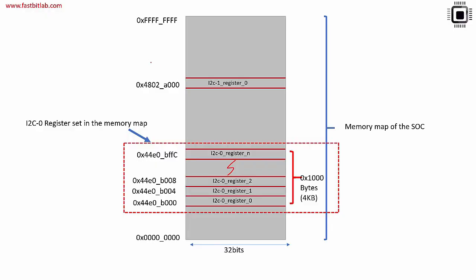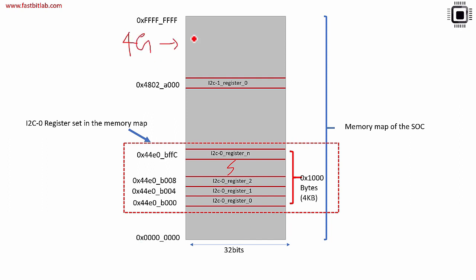Consider the memory map of the SoC — let's say it starts at 0 and ends at 0xFFFFFFFF, and each memory location is 32 bits, meaning four gigabytes of different memory locations are present. Somewhere in the memory map, a region is reserved for the i2c0 peripheral. For example, the first register of i2c0 starts at a specific location in the memory map and ends at another location, with the total size consumed being four kilobytes.